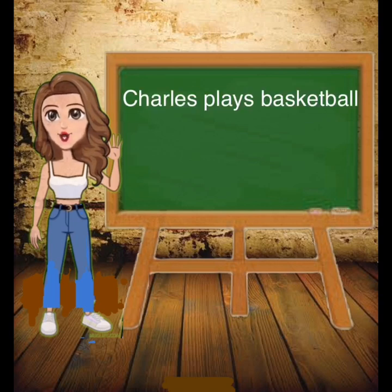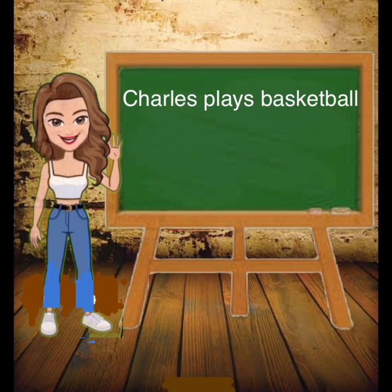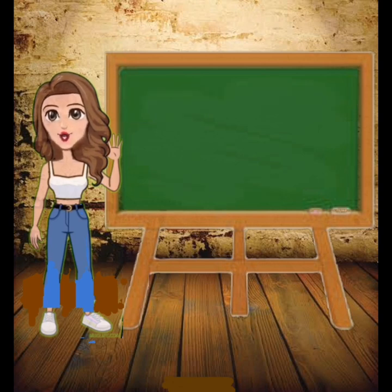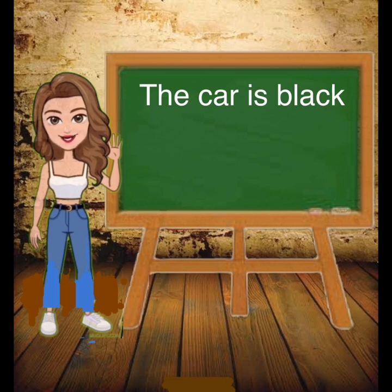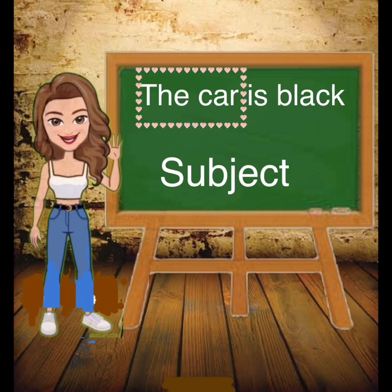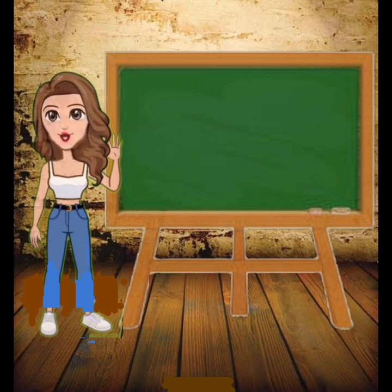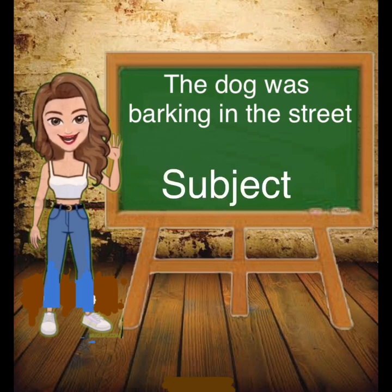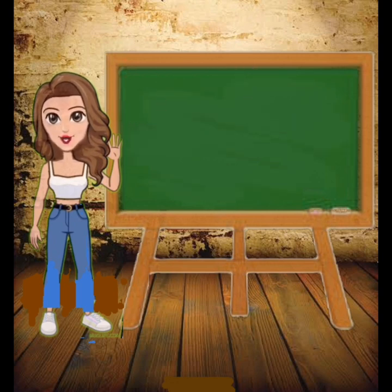Let's take an example: Charles plays basketball. Who is this sentence about? Charles is the subject, as this sentence is about Charles. Let's take another example: The car is black. The subject is 'the car' because the sentence is about the car. Another example: The dog was barking in the street. The sentence is about the dog, so the dog is the subject. I hope the subject part is clear to you.